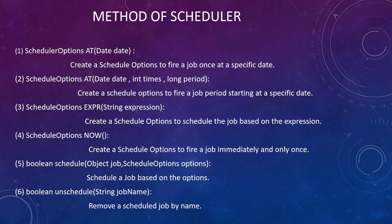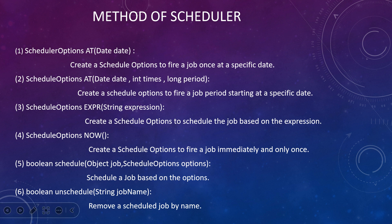Consider you have scheduled something for the 11th month, but now you want to check if it is actually executing or not. If you want to verify what output it is giving, then you need to use the now method. Using the now method, it will execute immediately so you can test it.